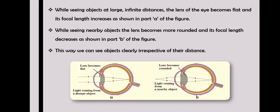While seeing objects at large, infinite distances, the lens of the eye becomes flat and its focal length increases, as shown in part A of the figure. The lens has become flat to see distant objects.